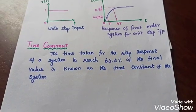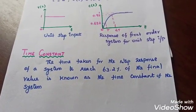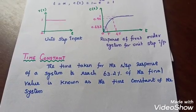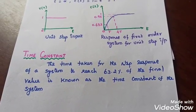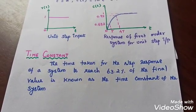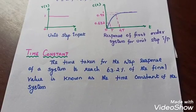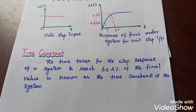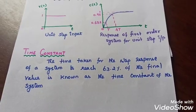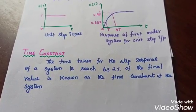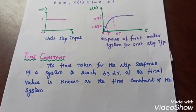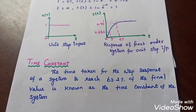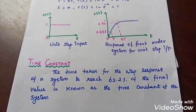You must know what is meant by time constant — this is an important exam question. The time constant of a first order system is defined as the time taken for the step response of the system to reach 63.2% of the final value. Thank you all.